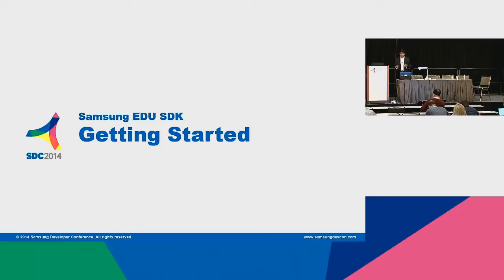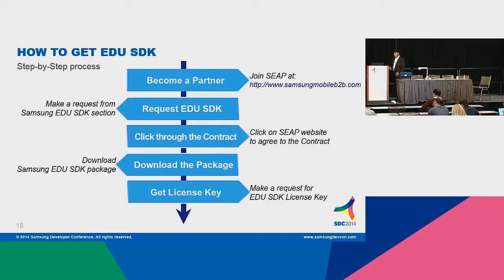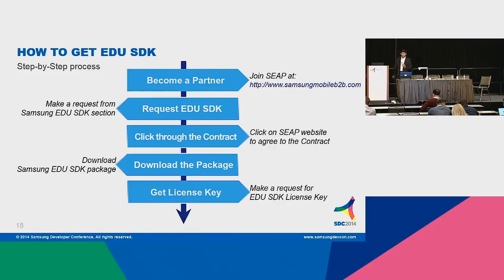To get started, you first need to become a partner, then request the EDU SDK — there is a contract to sign. You download the package, which includes sample programs, guides, and FAQs — everything you need for the SDK. Then you receive the license key. There are two license keys: a development license key valid for six months for development purposes, and a product license key that is authorized online to deploy your application.